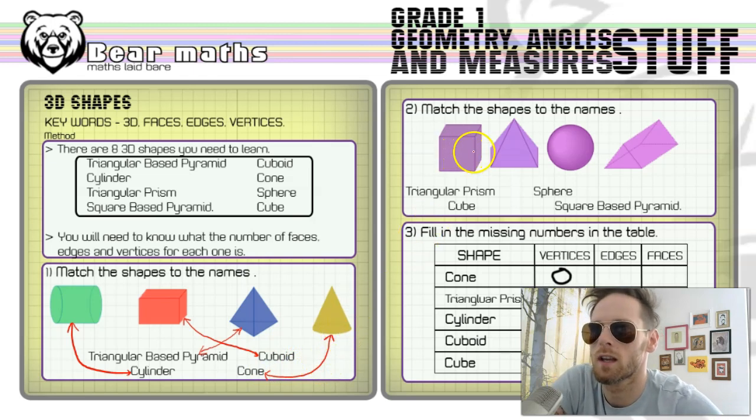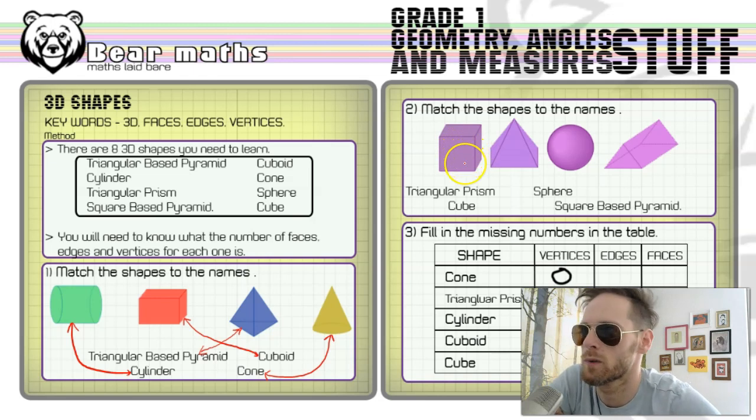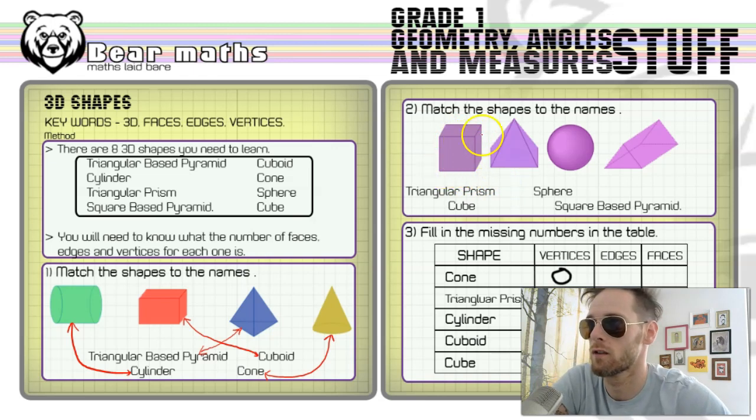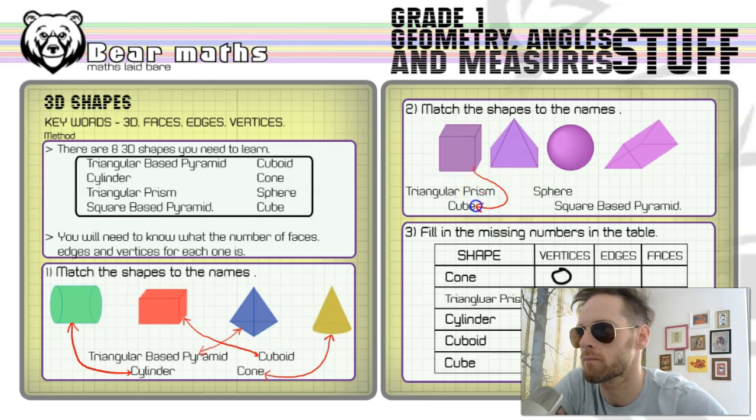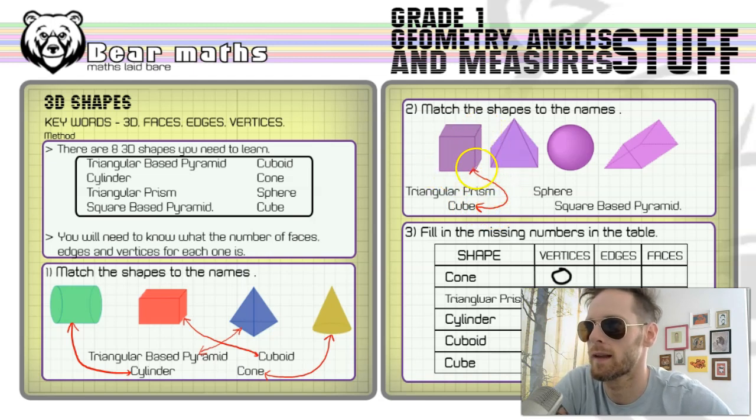Now number two, match the shapes to their names. There were eight shapes total; there were only four in the first question, so here's the next four. This first one here you could refer to as a cuboid, but we don't know for certain that all the lengths are the same. The option we've got here is cube, so this one is a cube. The special thing about a cube is it does have all the same length sides.